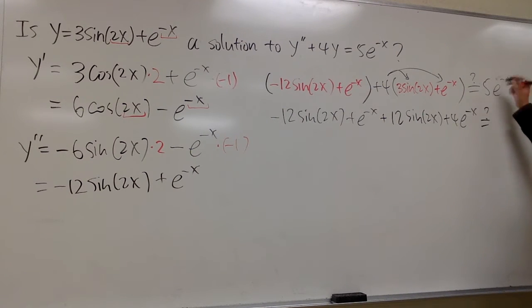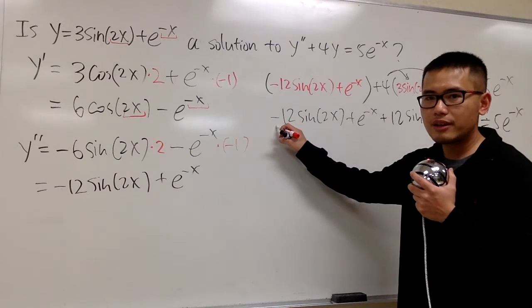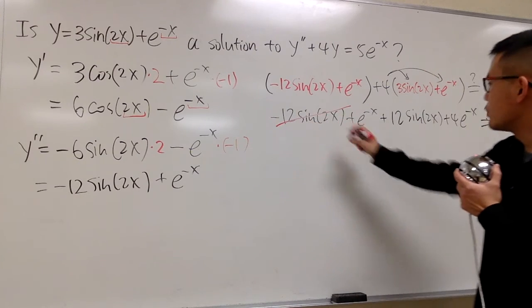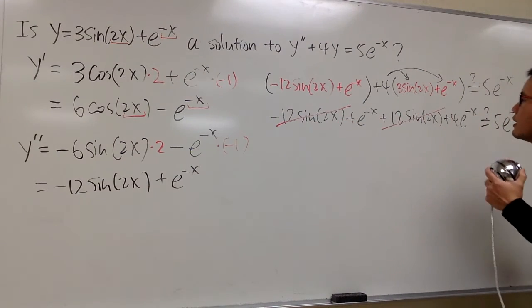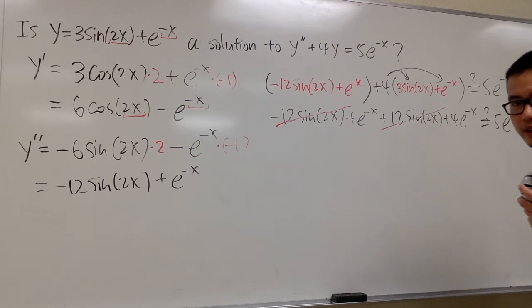And then this times that is plus 4 e to the negative x. Will I get 5 e to the negative x? I think so, because you see this right here, negative 12 sine of 2x, and the positive 12 sine of 2x cancel each other out.